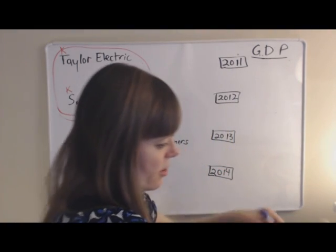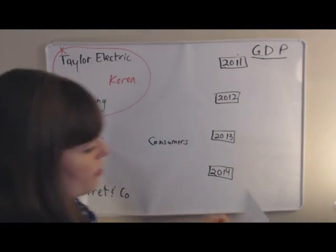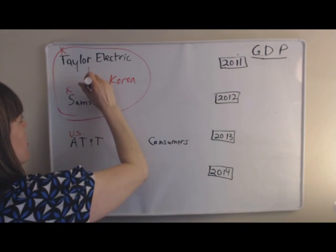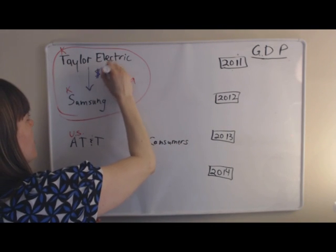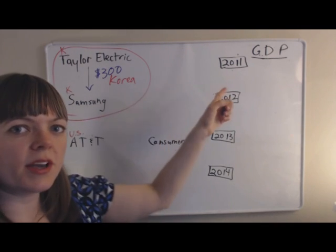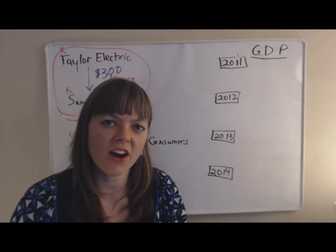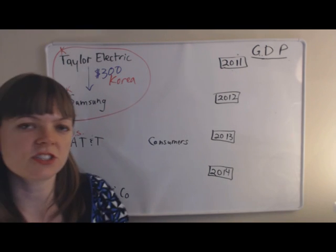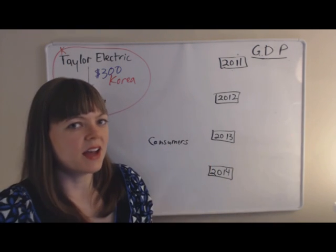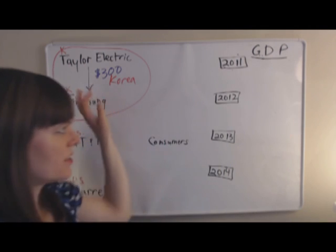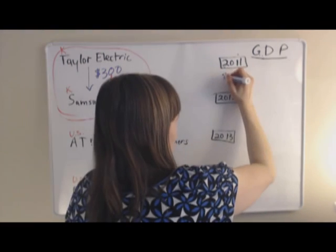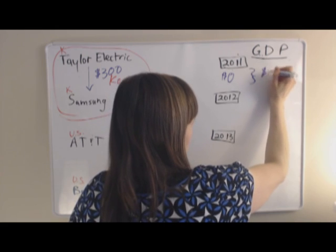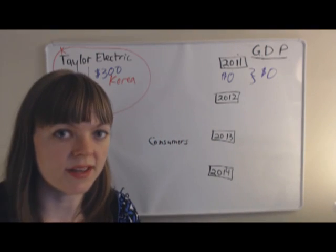We have $300 being sold from Taylor Electric to Samsung. What we're accounting for is U.S. GDP, so we don't care about stuff being sold between companies in Korea — that's just value created in Korea, nothing to do with the U.S. So this doesn't count for anything. We have zero components of GDP in 2011, and GDP is zero in 2011.